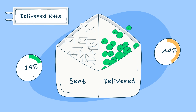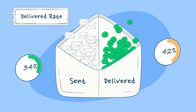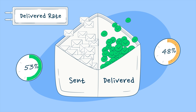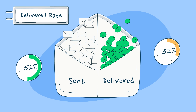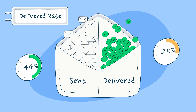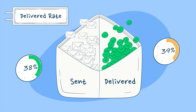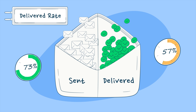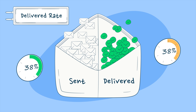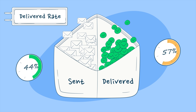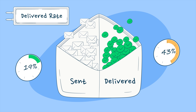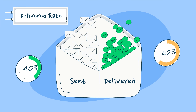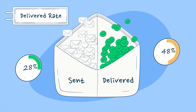First up is the delivered rate. This metric isn't just about sent emails. Delivered rate encompasses the percentage of emails accepted by recipient mailbox providers. A high delivered rate reflects efficient infrastructure, but doesn't guarantee that your emails are being seen.